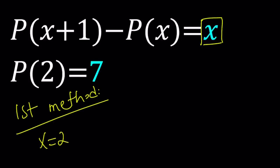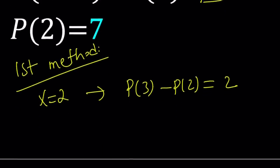Replace X with 2. You get P of 3 minus P of 2 equals 2. Now we know that P of 2 is 7. From here we get P of 3 equals 9. Great. Let's go ahead and write it down here so we can keep it together.